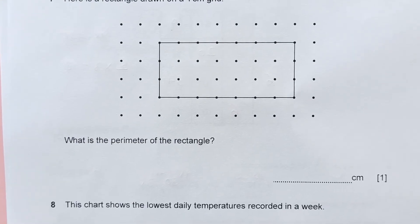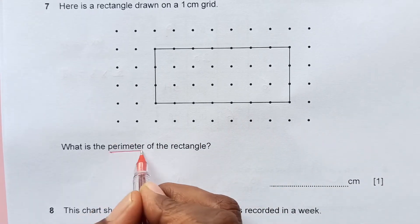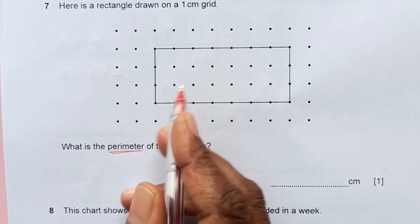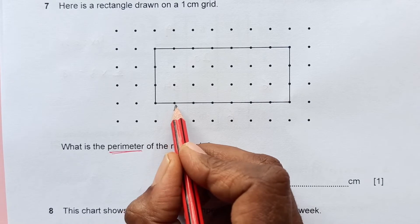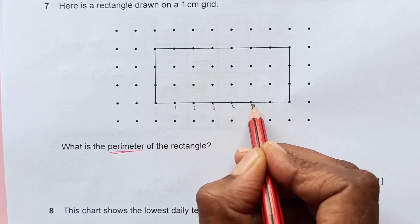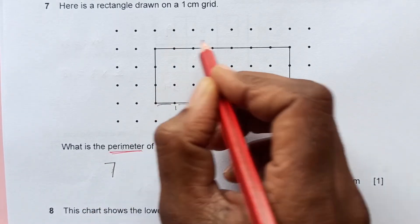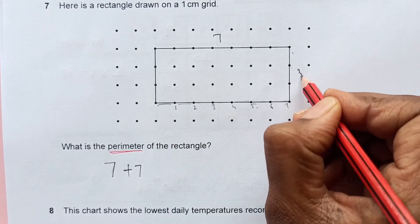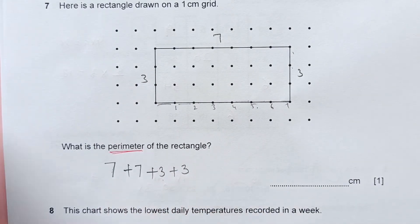Number 7. Here is a rectangle drawn on a centimeter grid. What is the perimeter? Perimeter is the sum of the sides or length all around the shape. We are going to count. 1, 2, 3, 4, 5, 6, and 7. So 7 on this side and 7 on this side. We have 1, 2, 3 on this side. 7 plus 7 plus 3 plus 3. 7 plus 3 is 10, 10 plus 10 is 20. So the answer is 20 centimeters.